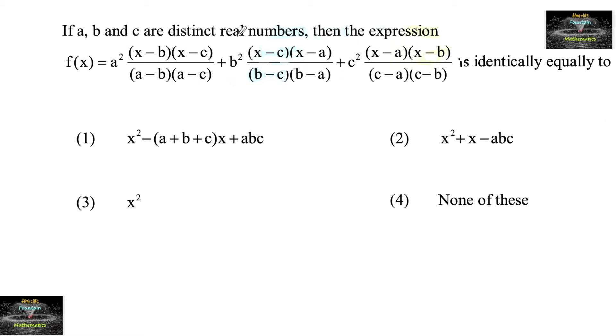If a, b and c are distinct real numbers, then the expression f of x is equal to a squared times x minus b times x minus c divided by a minus b times a minus c, plus b squared times x minus c times x minus a